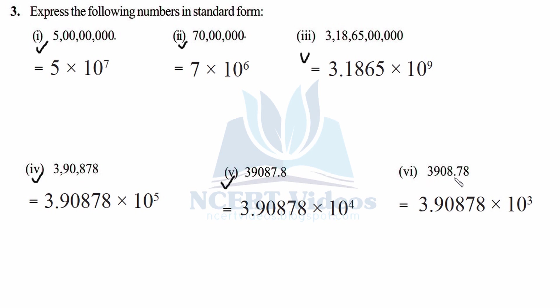For the sixth number with a decimal already present: write the number as 3.908789 first. Put your decimal after the first significant digit. Count all digits towards the left of the original decimal: 1, 2, 3, 4 — so 4 minus 1 equals 3. That gives 10 raised to power 3. Alternatively count digits from the new decimal position rightward to the original: 1, 2, 3 — giving 10 raised to power 3. Follow whichever method suits you best.